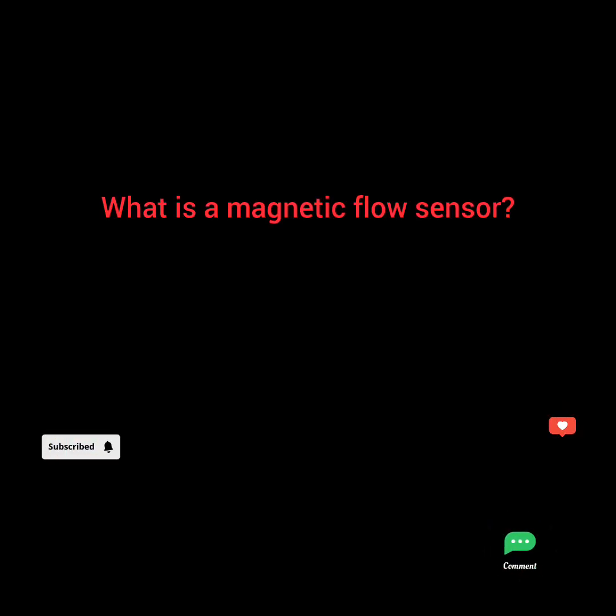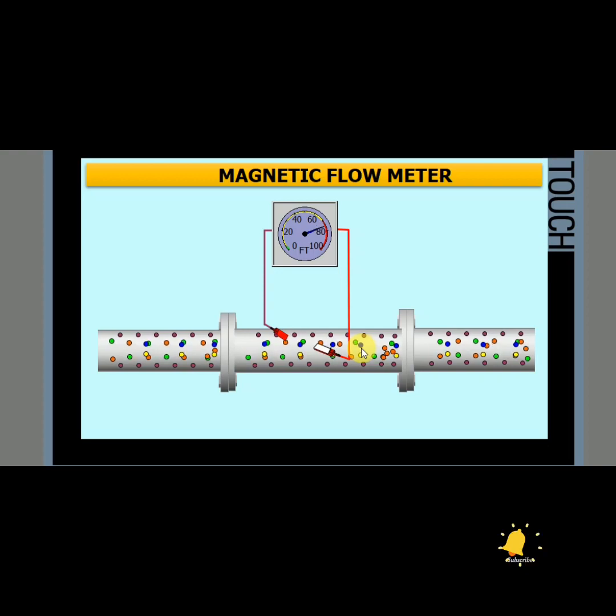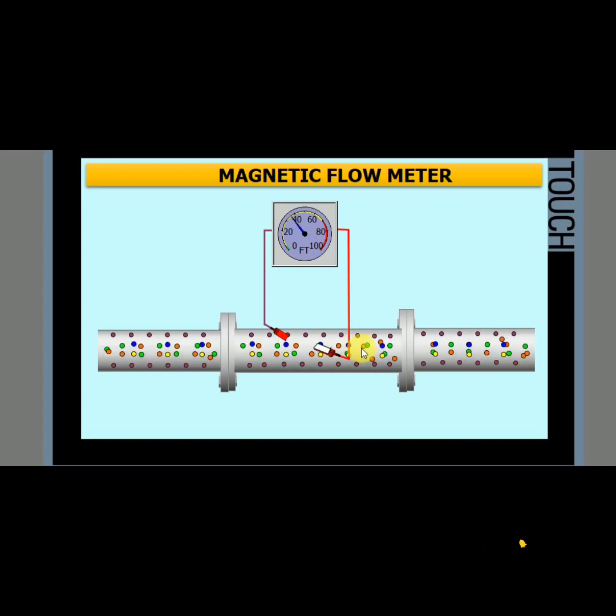What is a magnetic flow sensor? Magnetic flow sensors convert the velocity of a flowing fluid into a measurable electrical signal that is proportional to the flow rate. Magnetic flow meters have no moving parts or internal flow path obstructions, so they are easy to calibrate and maintain.